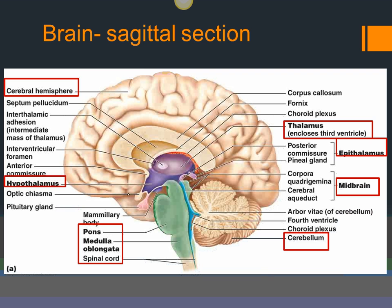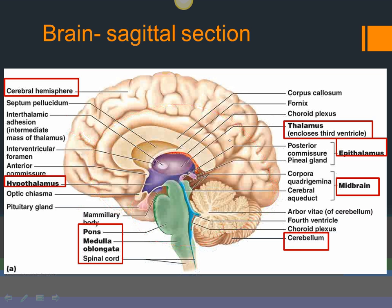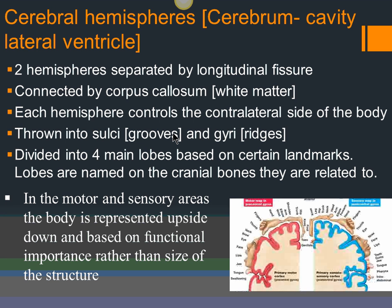If you imagine the other cerebral hemisphere drawn here, in between the two would be the longitudinal fissure. Connecting the two cerebral hemispheres is this band of white matter we call the corpus callosum. If we remove one cerebral hemisphere, you can see the corpus callosum — a band which connects the two hemispheres and allows transfer of information from one to the other.